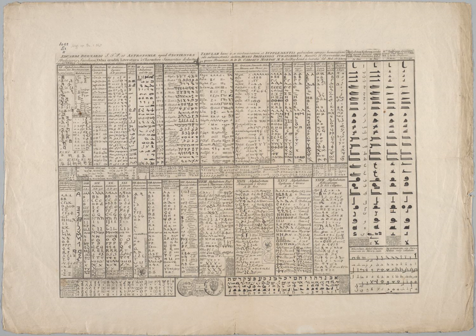The history of the alphabet started in Ancient Egypt. Egyptian writing had a set of some 24 hieroglyphs called uniliterals, to represent syllables that begin with a single consonant of their language, plus a vowel or no vowel to be supplied by the native speaker. These glyphs were used as pronunciation guides for logograms, to write grammatical inflections, and later to transcribe lone words and foreign names. In the Middle Bronze Age, an apparently alphabetic system known as the Protosinaitic script appears in Egyptian turquoise mines in the Sinai Peninsula, dated to circa the 15th century BC, apparently left by Canaanite workers.